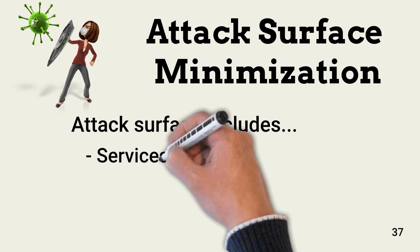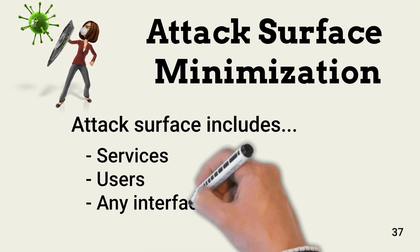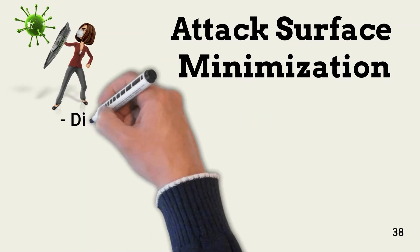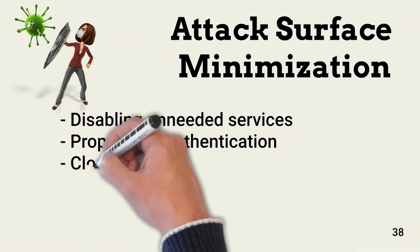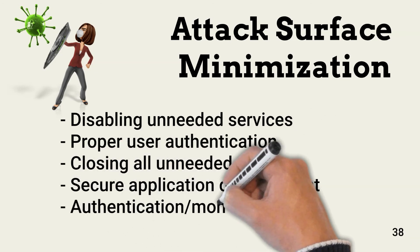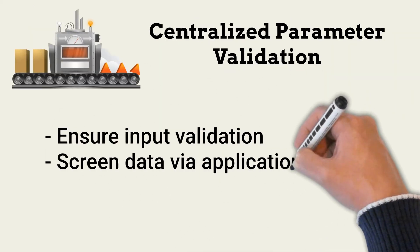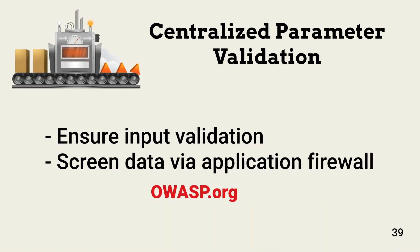A system's attack surface includes any interfaces or services that enable interaction with other systems or with users. We minimize the attack surface by disabling any unused services and closing all unneeded ports. We also ensure that anything that interfaces with the system must authenticate. Applications must be securely designed and developed. This altogether is known as system hardening. Parameter validation is all about input validation — attackers use malicious input strings to steal or change database content. Under no circumstances should free-form input be allowed. The OWASP provides guidelines for input parameterization.